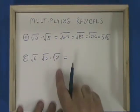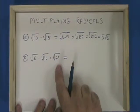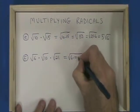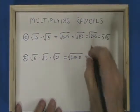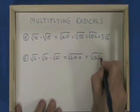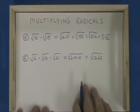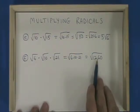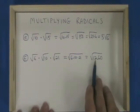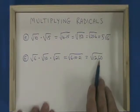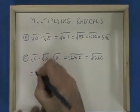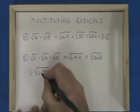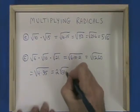Here we have three terms: root 6 times root 10 times root 21. That gives us the square root of 6 times 10 times 21, which is the square root of 1260. I don't have to find the biggest factor of 1260 that is a perfect square — it's a large number, so it's enough to find any factor that is a square. I can see that 4 is a factor of 1260, so I'll break it into 4 times 315. The square root of 4 is 2, which comes out, and the 315 is trapped within.